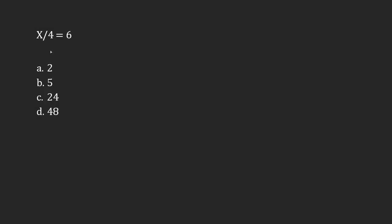x divided by 4, or x over 4, is equal to 6. To isolate x, since x is being divided by 4, I need to multiply both sides by 4 — so 6 times 4 on the other side.